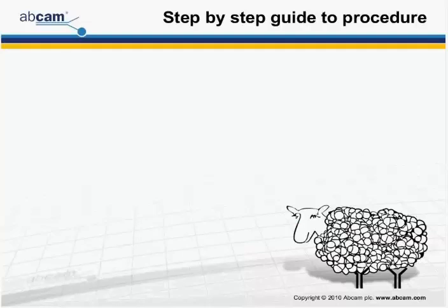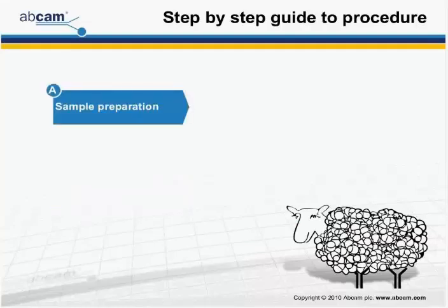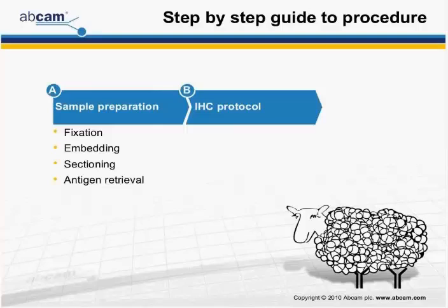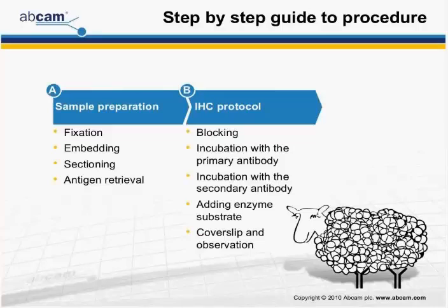Now I'd like to go into how immunohistochemistry is performed. I'm going to divide this into two main elements. The first is sample preparation, which will involve fixation of the tissue, embedding it into a matrix so that it can be sectioned, and then antigen retrieval. The second element is the actual IHC protocol: blocking, incubation with the primary antibody targeting your protein of interest, incubation with a secondary antibody specific for the primary antibody for detection, adding an enzyme substrate for enzyme-conjugated secondaries, and finally cover slipping and observation.